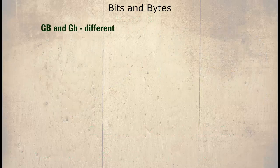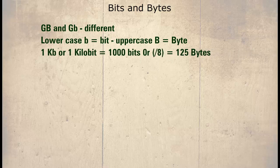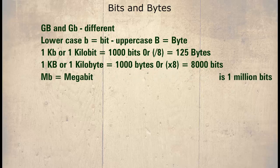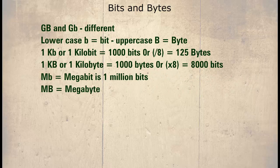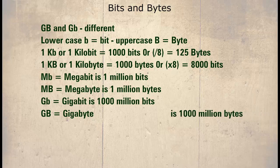A confusing piece of computer terminology is Gb and GB, which are actually totally different. A lowercase 'b' signifies bit, whilst an uppercase 'B' signifies byte. For example, 1 Kb (lowercase b) is 1 kilobit or 1000 bits — to convert this to bytes, we divide by 8, so 1 kilobit is only 125 bytes. 1 KB (uppercase B) is 1 kilobyte or 1000 bytes — to see how many bits this is, we multiply by 8, resulting in 8000 bits. Further examples: Mb (megabits) is 1 million bits; MB (megabytes) is 1 million bytes; Gb (gigabits) is 1000 million bits; and GB (gigabytes) is 1000 million bytes.